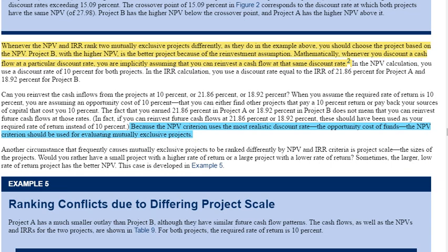Whenever the NPV and IRR rank two mutually exclusive projects differently, you should choose the project based on NPV. Project B with the higher NPV is the better project because of the reinvestment assumption — mathematically, whenever you discount a cash flow at a particular discount rate, you're implicitly assuming that you can reinvest the cash flow at the same discount rate. That's the importance of going through not only slides and practice questions, but also the examples and finer, more subtle points in the text.